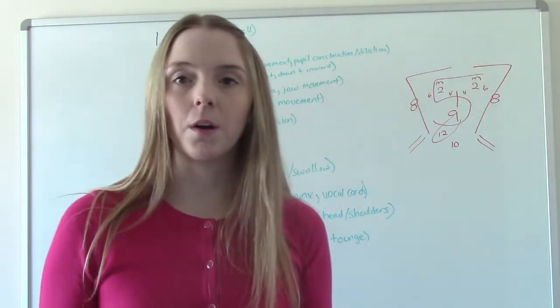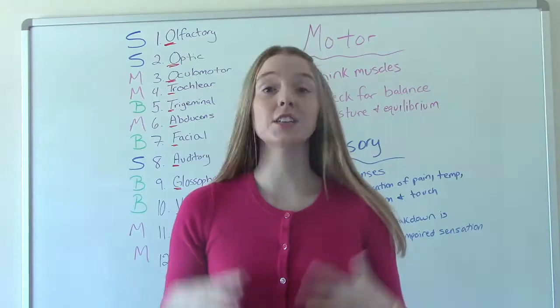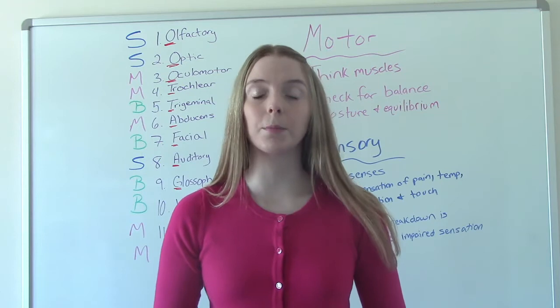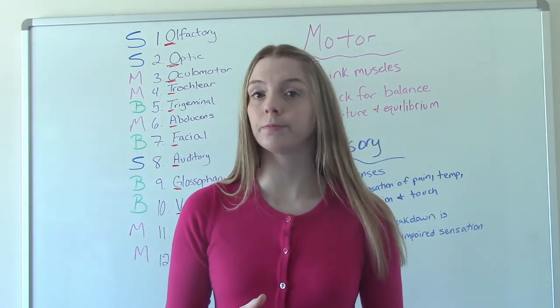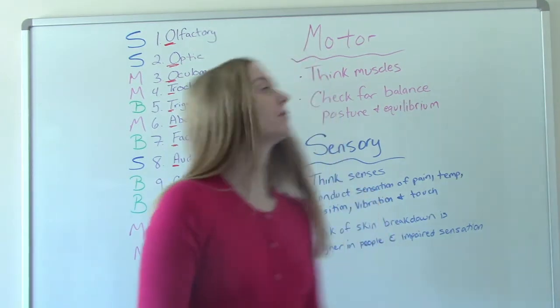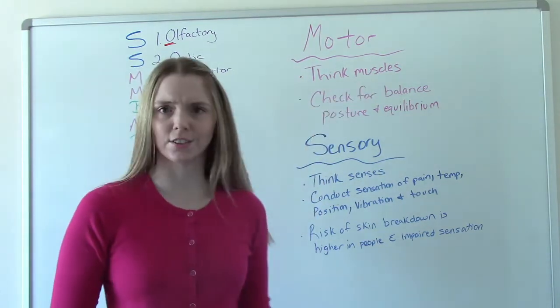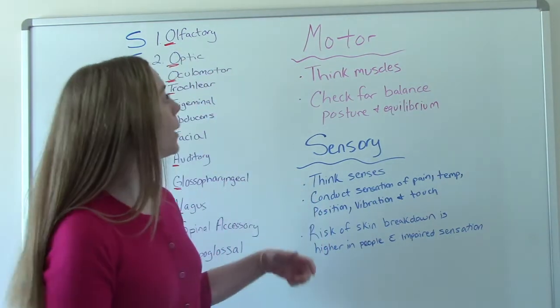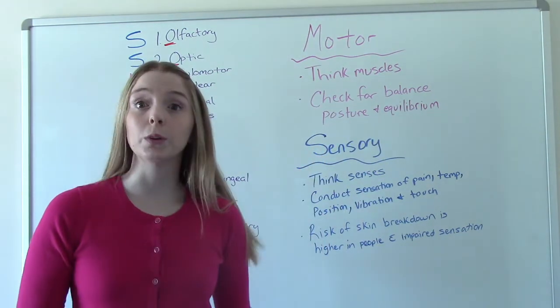Now we're going to talk about sensory versus motor cranial nerves. So now that we've reviewed all 12 cranial nerves, let's further break them up into the categories of sensory, motor, or both. So how do I know if something is a sensory or a motor? When you hear the word motor, I want you to think muscles. So muscle, movement, motor, all those M words. So what motor function is, is it checks for balance, posture, and equilibrium.